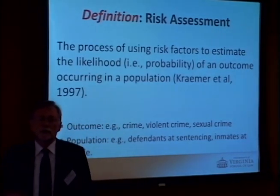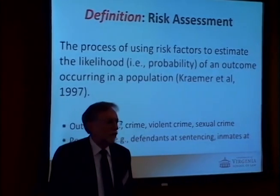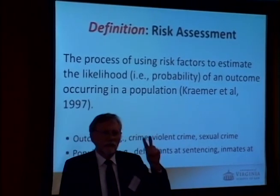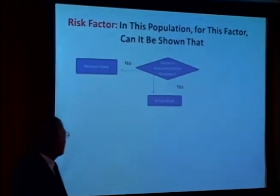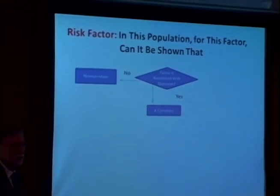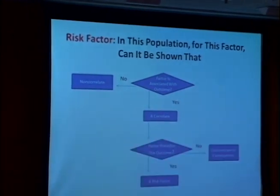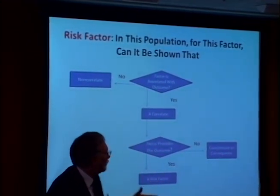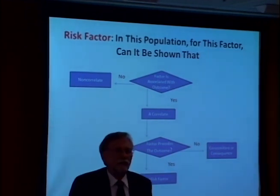The populations upon whom risk assessment is practiced could be defendants at the time of sentencing, taking likelihood of future crime into account, or it could be inmates at the time of parole. The key issue is what do we mean by risk factor? To say that A is a risk factor for B means two things and two things alone: A and B statistically correlate — when A tends to go up, B tends to go up — and secondly, A comes before B in time. So if you have statistical correlation and temporal order, then you have a risk factor.